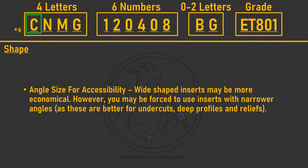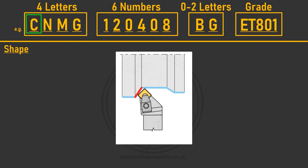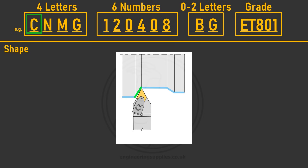It's not always possible to get the best cost per edge. Sometimes you need to do a recess, undercut, or profile where a wider angle insert just won't do, and you have to go for the shape with narrower angles that will do the job.